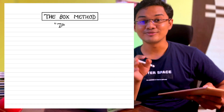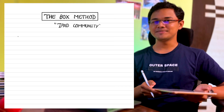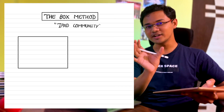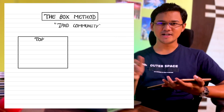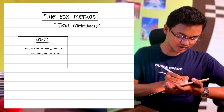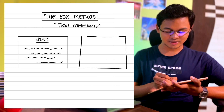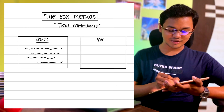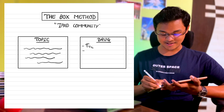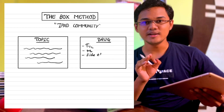In fact, the box method was created by the iPad community specifically for use on the iPad. As the name suggests, you create boxes for topics and subtopics and write all the key points under them. Just make a box, write the subtopic over the box, and write all the information inside it. On iPad you have freehand drawing, which means you can create perfect boxes very easily.